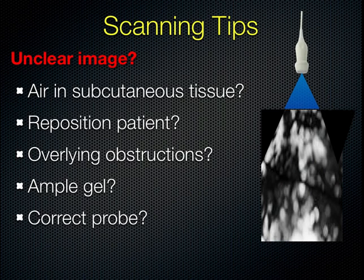When you're having difficulty obtaining an image of the lungs, it's often frustrating. The lungs themselves are fairly impossible to see in a normal aerated lung because air will scatter ultrasound waves. Other things that can interfere include subcutaneous emphysema, poor patient positioning, overlying obstructions such as EKG pads and monitor clips, and insufficient gel causing air between the probe and skin. Lastly, make sure you have the correct probe for your scan.